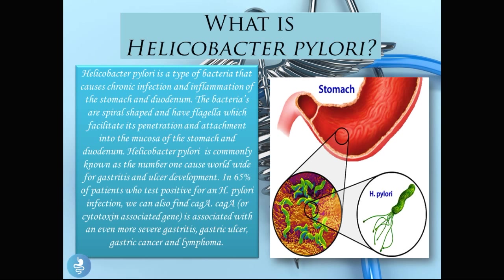So what is Helicobacter pylori? Helicobacter pylori is a type of bacteria that causes chronic infection and inflammation of the stomach and the duodenum. The bacteria are spiral shaped and have flagella which facilitate their penetration and attachment into the mucosa of the stomach and the duodenum. Helicobacter pylori is commonly known as the number one cause worldwide for gastritis and ulcer development.